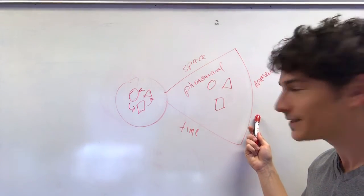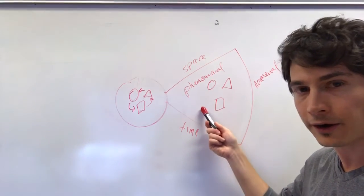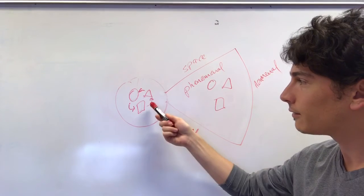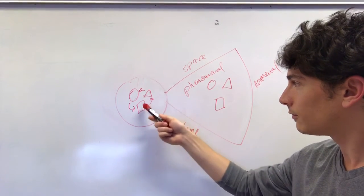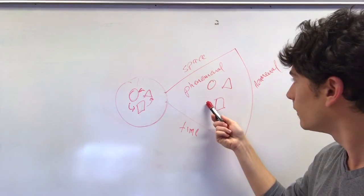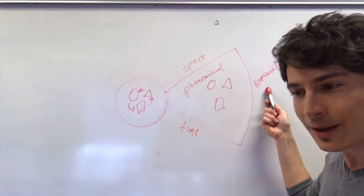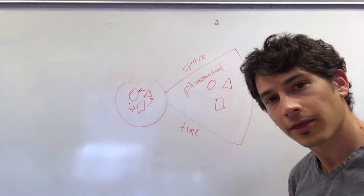But when he says that the noumenal realm is somehow the cause of our phenomenal experience of apparent objects, he's applying a phenomenal category of causation. It's only supposed to be applicable to this realm in order to understand this realm, the noumenal realm. So he's overstepping the bounds of his own transcendental method.